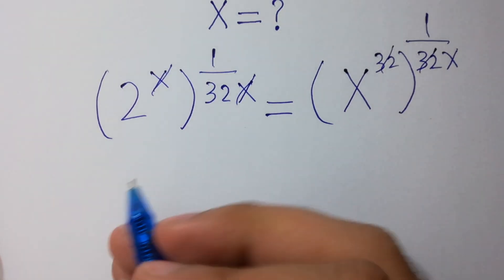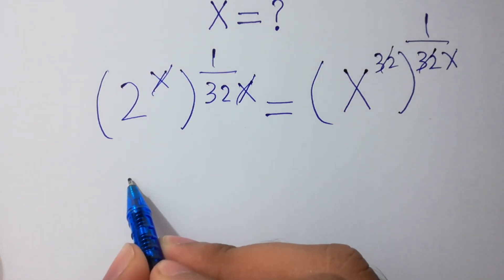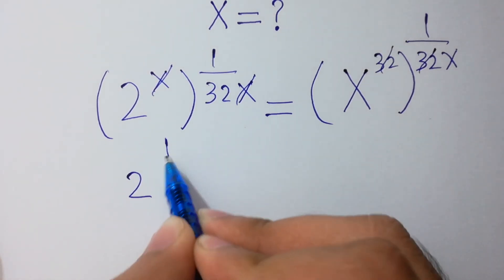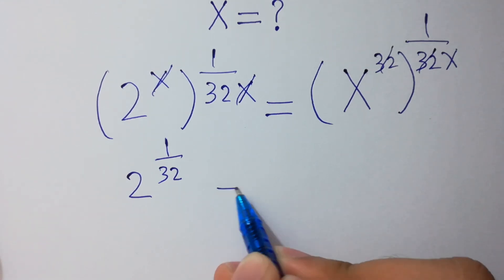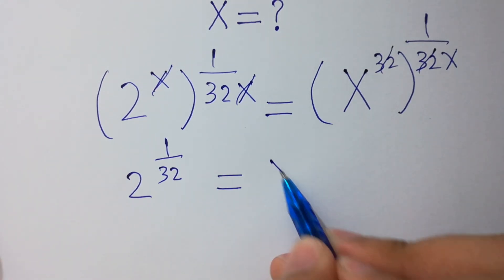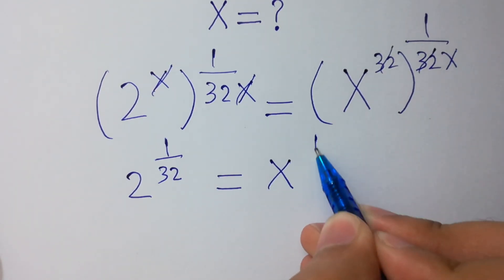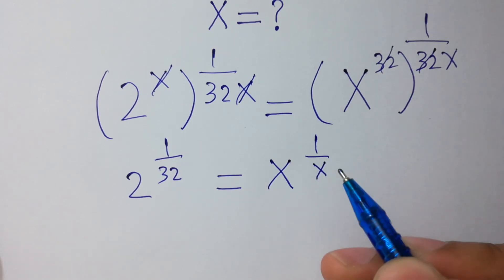We have 2 to the power 1 over 32 equals x to the power 1 over x. Clear?